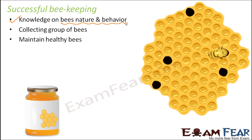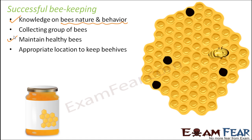Many times people, in order to cut costs or out of greed to get more honey, feed honeybees a solution of sugar water instead of letting them feed on nectar. But that affects their health adversely. Honeybees should always be allowed to feed on their nectar; if they are healthy, they will give more honey of good quality. Honeybees need a variety of food to maintain a strong immune system. Also, appropriate location to keep beehives is important — the location should be away from environmental stresses that would have a negative impact.